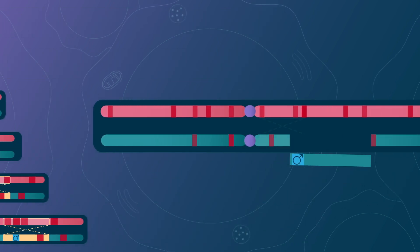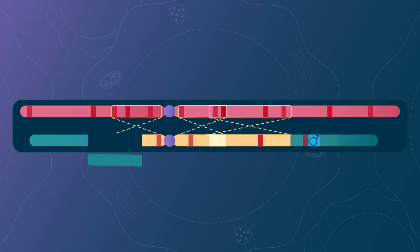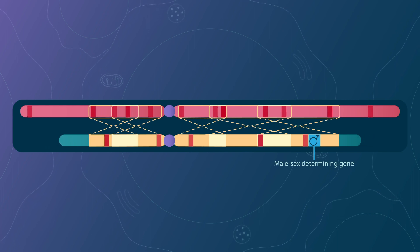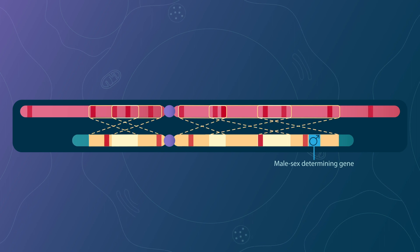If this occurs multiple times, several overlapping inversions will fix on the Y chromosome, preventing genetic mixing with the X chromosome, and they will thereby become more and more different.